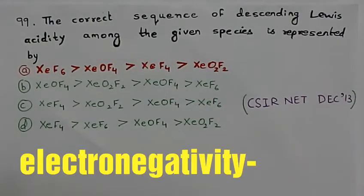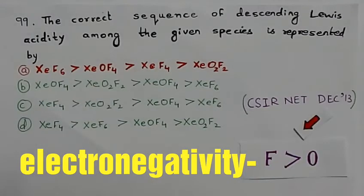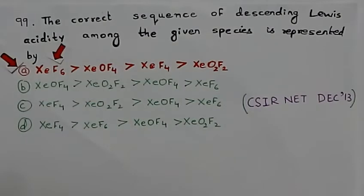In such cases the Lewis acidity depends on the electronegative atom and the number of such atoms. Fluorine is the most electronegative atom, more so than oxygen, so a greater number of fluorine atoms means greater Lewis acid character. When you consider option A, xenon hexafluoride is the most acidic since it contains six fluorine atoms.